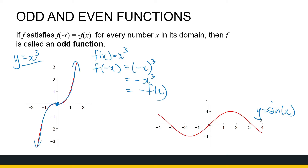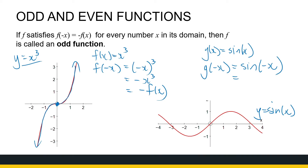Now let's look at sin x. If g of x is equal to sin x, and I look at g of minus x, that's sin of minus x. From our trig identities, sin of minus x is minus sin of x, which is minus g of x. So g of minus x equals minus g of x, confirming sin x is an odd function.